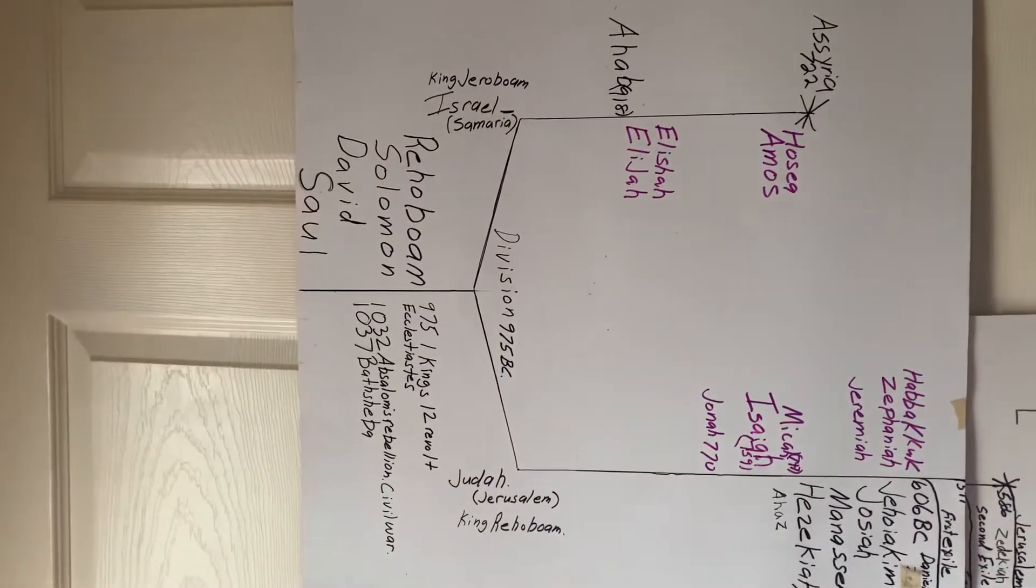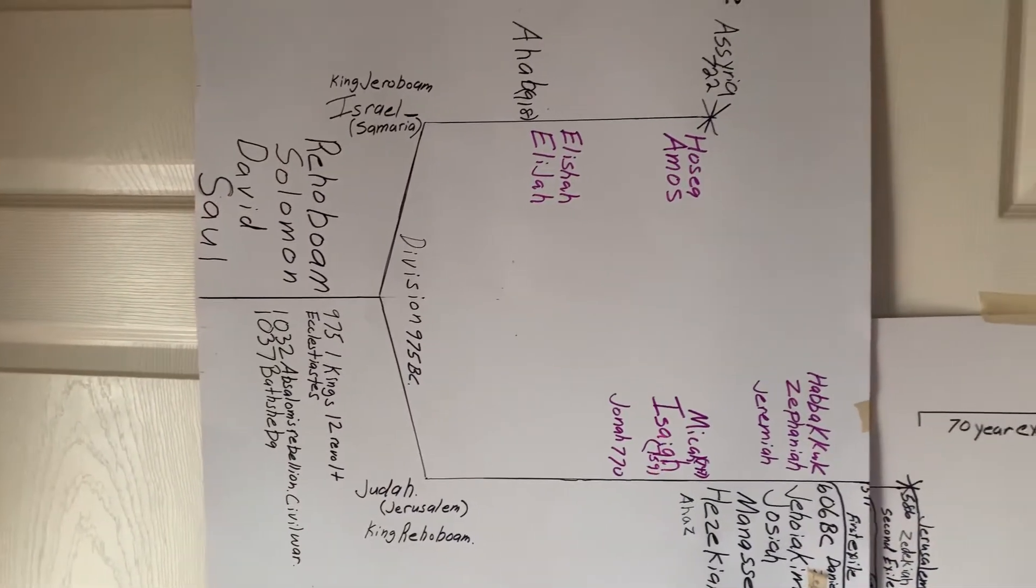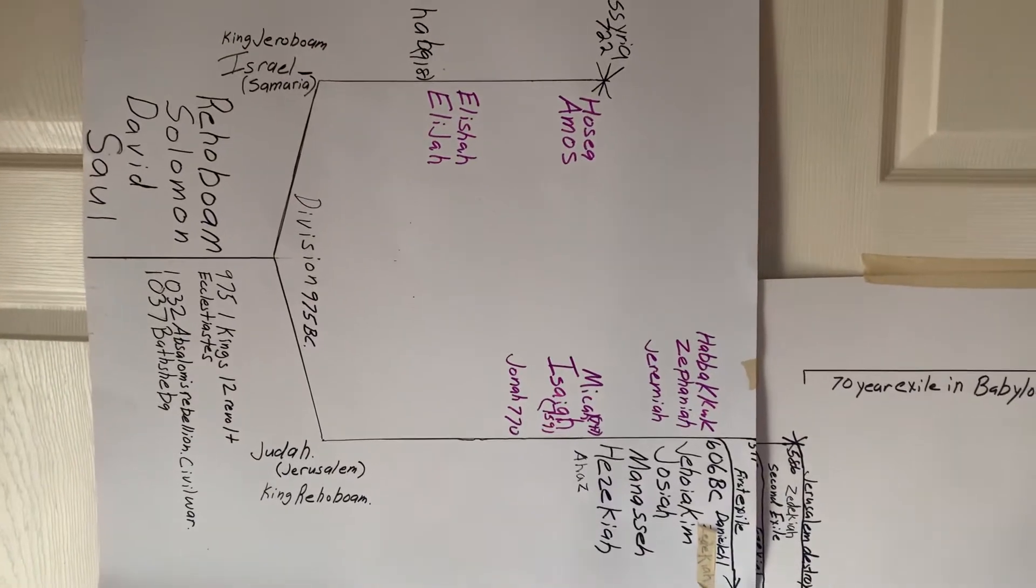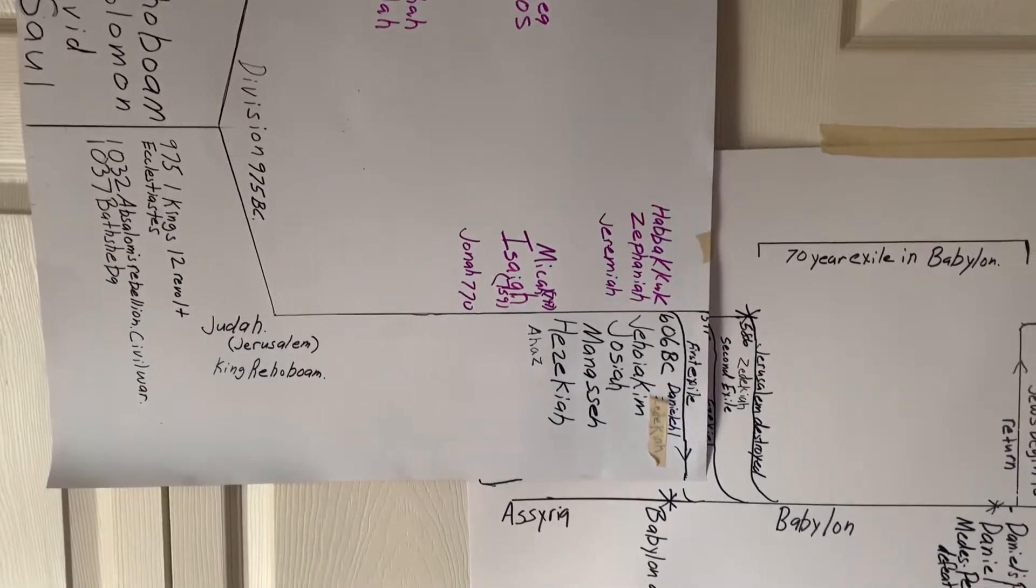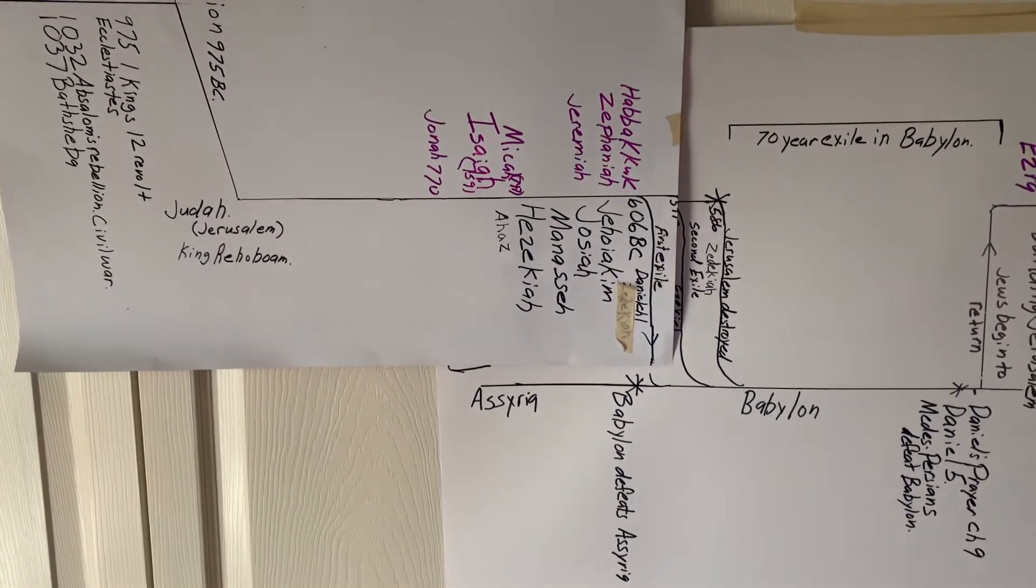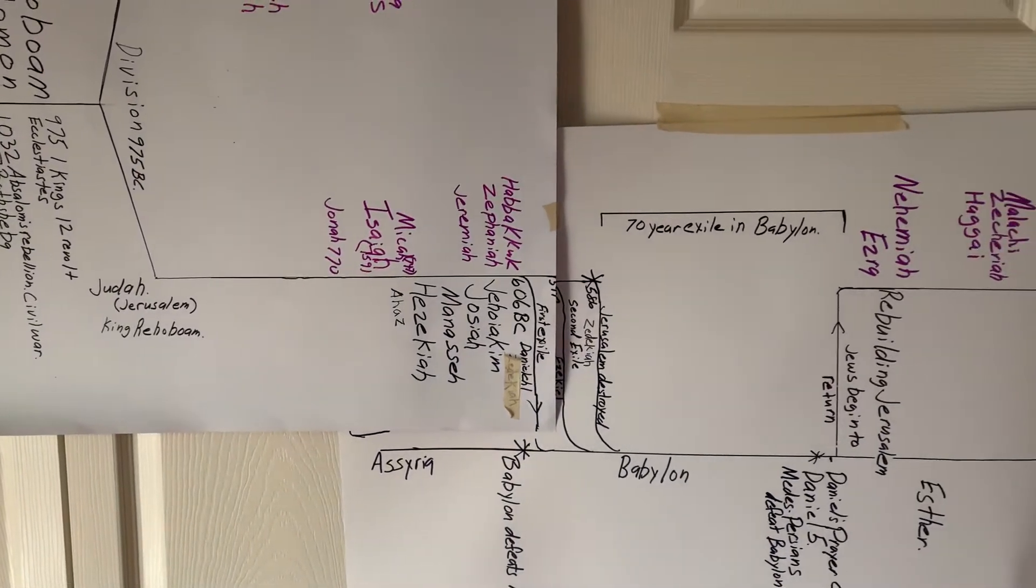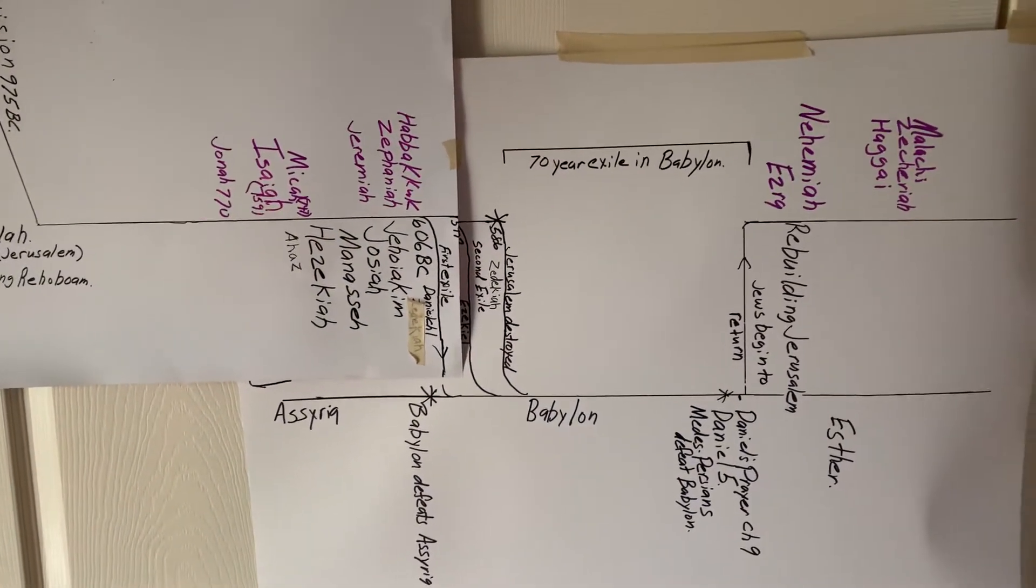Okay, here is a time chart that I made from studying a chronological Bible. Something like this is very easy to make. You just follow the events that the chronological Bible tells you, and you can make your own timeline if you'd like to.